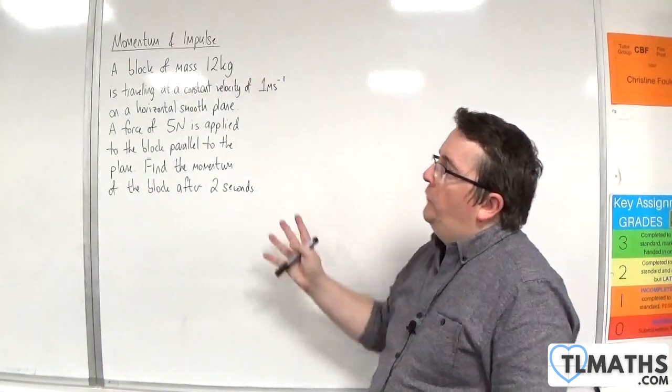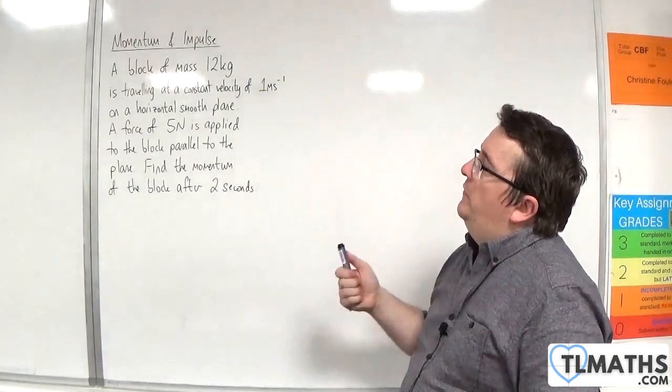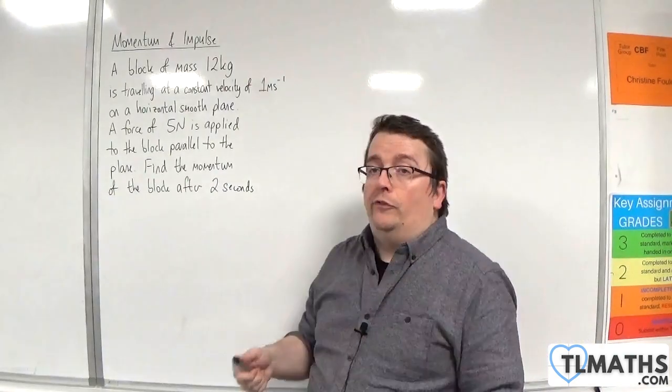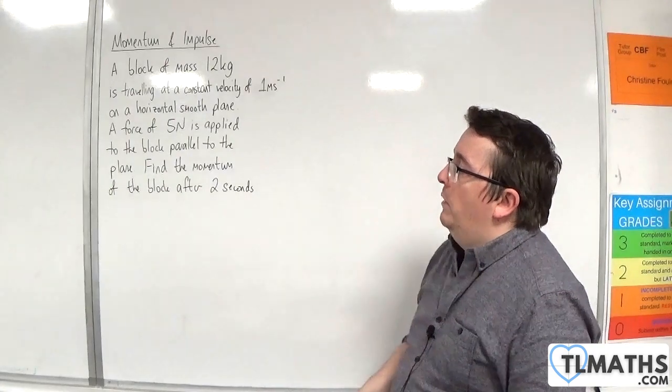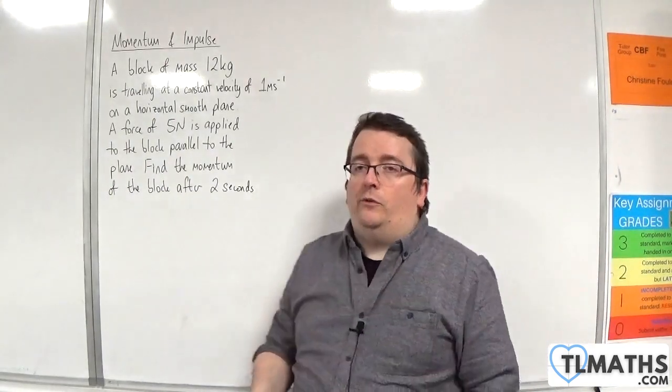In this problem we're going to look at the same block of mass 12 kilos and it's traveling at a constant velocity of 1 meter per second on a horizontal smooth plane. A force of 5 newtons is again applied to the block parallel to the plane. Find the momentum of the block after two seconds.